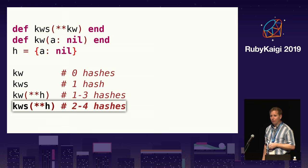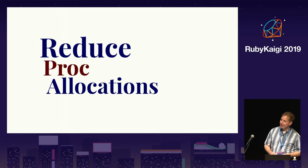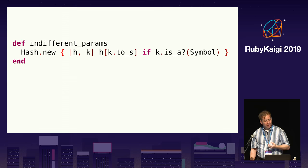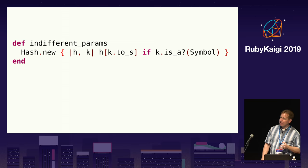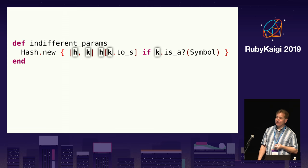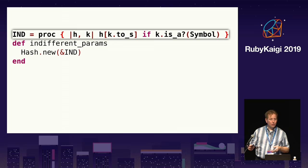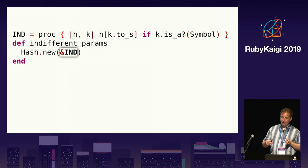After that extended detour into keyword arguments, let me discuss reducing proc allocations. In general, in performance sensitive code, you should avoid allocating procs that are not needed as closures. Here's a simplified example from Roda's indifferent params plugin. One thing to notice about this proc is that it does not have any dependencies on the surrounding scope — it does not access any instance variables. The only local variables accessed are the arguments that are yielded to the proc. This proc can be extracted to a constant and then passed as the block argument to Hash.new. Moving this block to a constant makes the code over three times faster.